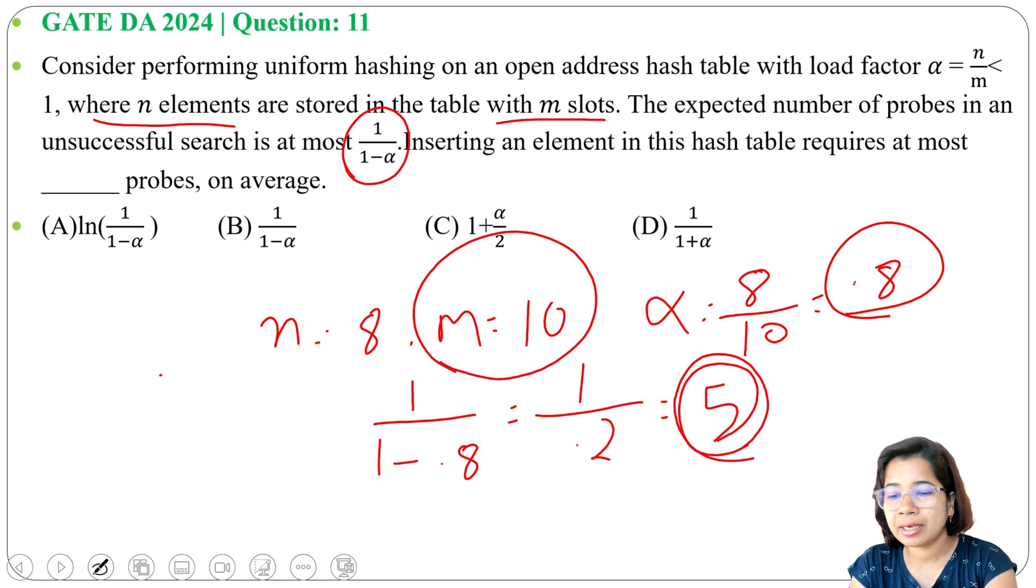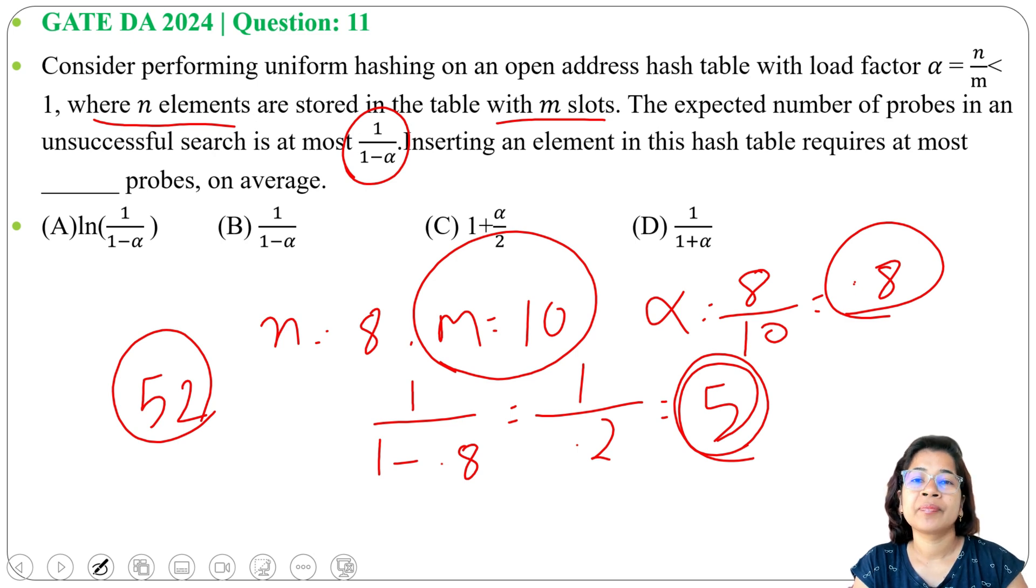Suppose we are inserting an element 52. So we will check is there any slot available for 52. So we need to check by some technique is there any slot available for inserting this element. If available we will insert. If not available then we can say there are no slots available for this element. So that will also require same number of probes as an unsuccessful search.